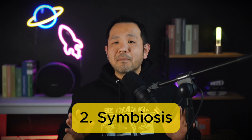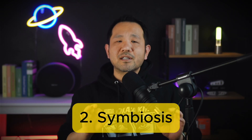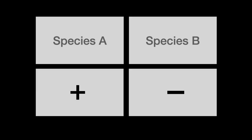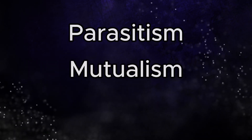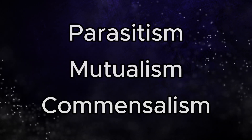Now let's move on to symbiosis. Symbiosis includes a set of very specific interspecific interactions derived from direct and intimate relationships, typically based on some evolutionary history and development. We can still use the same plus-and-minus convention here. We need to be aware of three major symbiotic relationships: parasitism, mutualism, and commensalism.